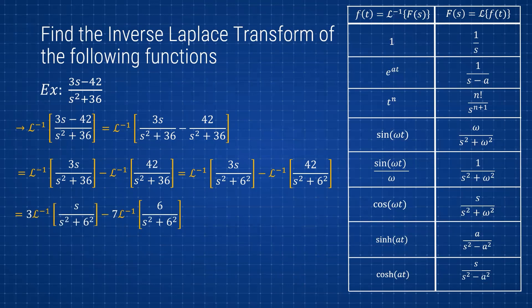For the first term we factor out 3, giving 3 times s/(s²+6²), which matches the cosine form with ω = 6. For the second term, factoring out 7 from 42 gives 7 times 6/(s²+6²), which matches the sine form with ω = 6 — that's why we factor out 7, so the numerator becomes ω. Substituting in the inverse Laplace of each: the final answer is 3cos(6t) minus 7sin(6t).